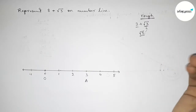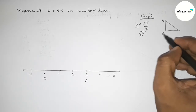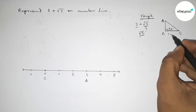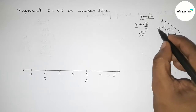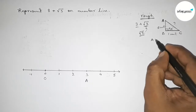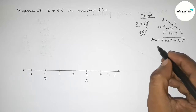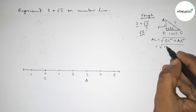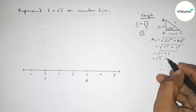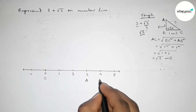Before representing root 3, we first need to represent root 2. Roughly drawing a right angle triangle ABC with 90 degrees. If the base equals one unit and the perpendicular equals one unit, then by Pythagoras theorem: AC = root of (BC² + AB²) = root of (1² + 1²) = root of 2 units.